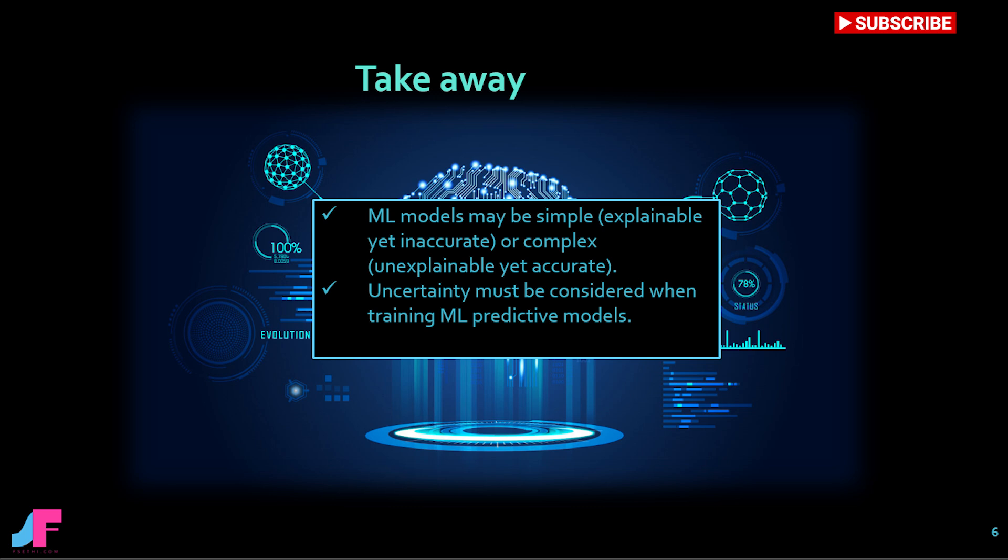Key takeaway: ML models may be simple, explainable yet inaccurate, or complex, unexplainable yet accurate. Uncertainty must be considered when training ML predictive models.